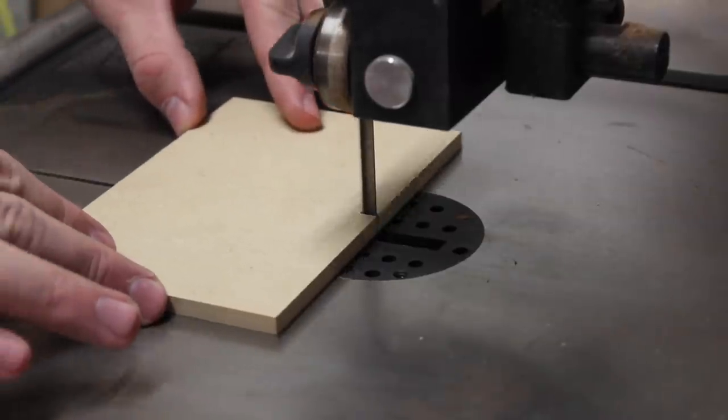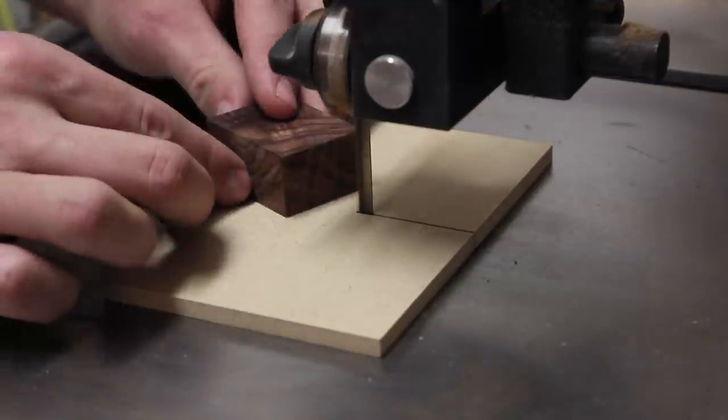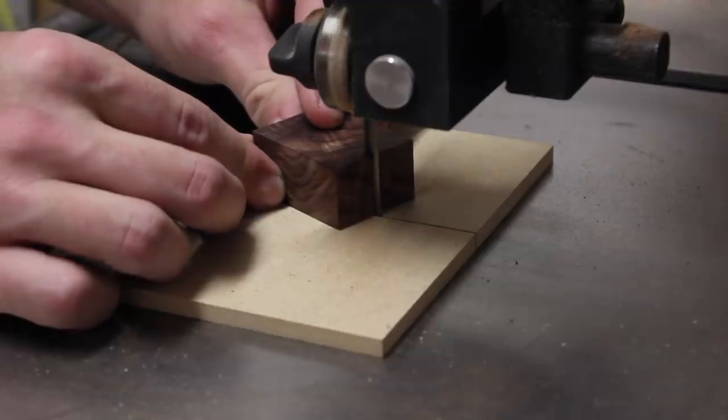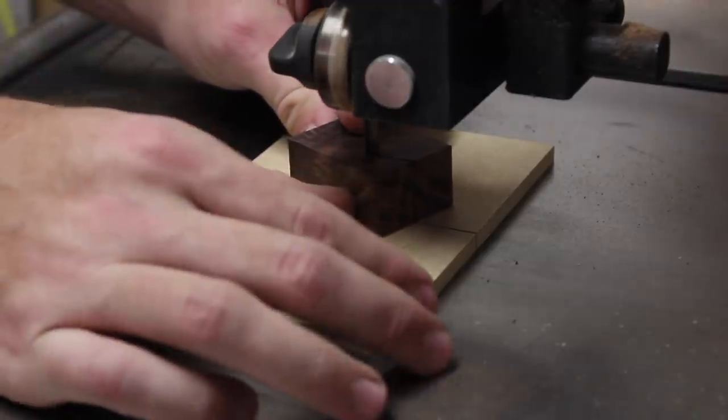And this is the one design element in the whole box. It's just giving it a slanted top. I did that with the bandsaw and took it over to the belt sander to clean up the rough edge.